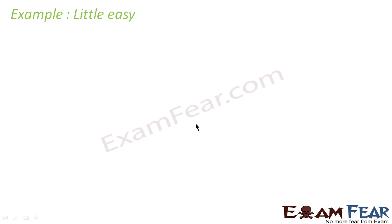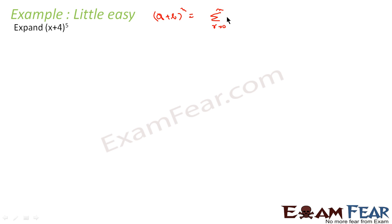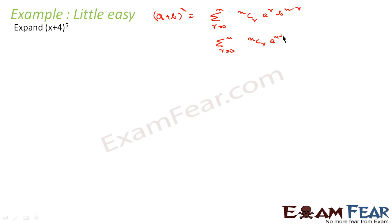Let's take one binomial example, a little easy. We have to find (x + 4) to the power 5. We know the formula: (a + b)^n equals summation from r = 0 to n of nCr times a^r times b^(n−r), or equivalently nCr times a^(n−r) times b^r. Both are true.